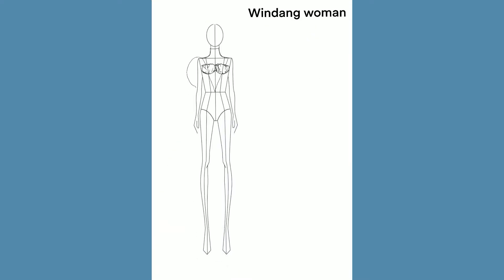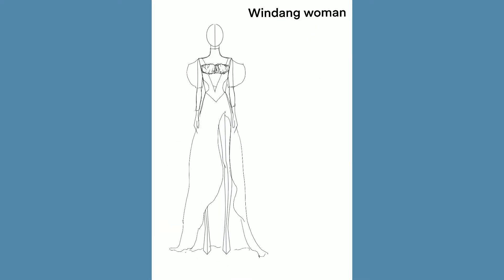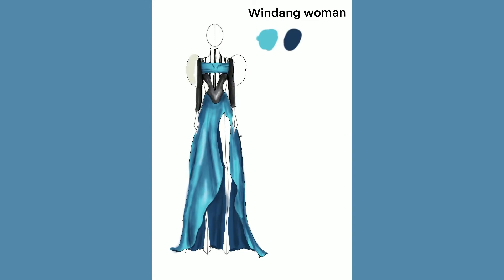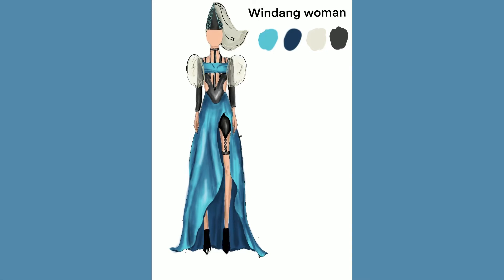The second character is Windang Woman. She has a characteristic of sophistication, edginess, and a sexy look. Her symbol of a compass represents the rows of the winds and the orientation of cardinal direction. Her A-line skirt gives a fluidity while she uses her power.